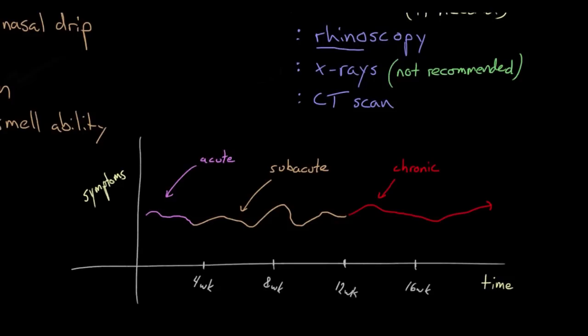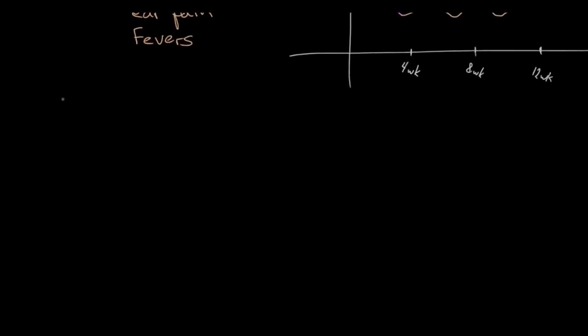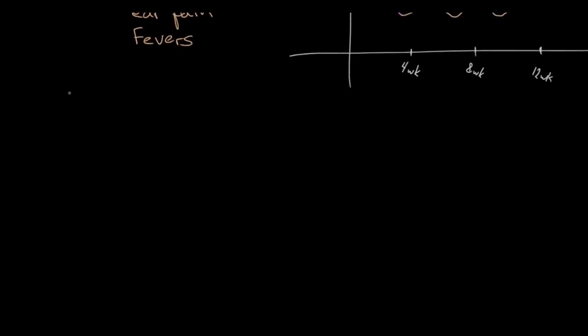But before we can talk about treatment, we have to puzzle out one more thing about the sinusitis in question because it's going to have a big impact on how we treat it. The thing that we have to further define, and we're talking about infectious sinusitis here, is whether it's caused by a virus or a bacteria. It's impractical and not very successful to try and actually isolate the virus or bacteria that's responsible for sinusitis, and we've talked before about how the vast majority of sinus infections are actually viral. So the best way to actually figure it out has to do with the time course.